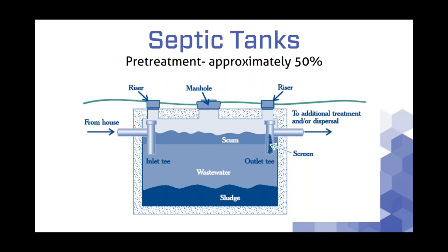Septic tanks are widely used in cluster systems and septic systems in general in the U.S. They're normally made from concrete, plastic, or sometimes fiberglass. There are three distinct layers inside these tanks: the top layer is called the scum layer — floating materials such as tissues and grease from the house. The bottom layer is the sludge layer — solids settling out from the incoming waste. The zone in the middle is called the clear zone, and that's the zone we're trying to pick up effluent from to move it to the advanced treatment system.